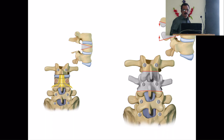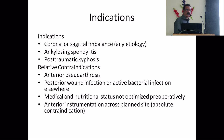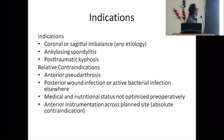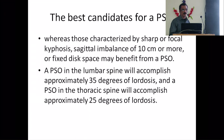That is the technique. Indications are coronal sagittal imbalance, ankylosing spondylitis, and post-traumatic kyphosis. There are some relative contraindications like anterior pseudoarthrosis, posterior wound infection, or active bacterial infection elsewhere, as well as prior anterior instrumentation — same as in SPO.